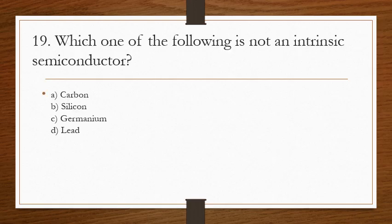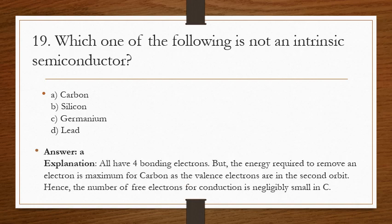Question 19: which of the following is not an intrinsic semiconductor? The answer is A. All four choices have four bonding electrons, but the energy required to remove an electron is maximum for carbon, as the valence electrons are in the second orbit. Hence, the number of free electrons available for conduction is negligibly small in carbon.